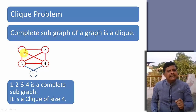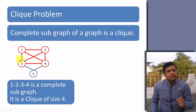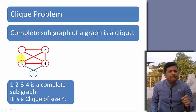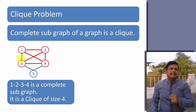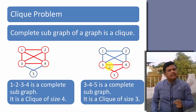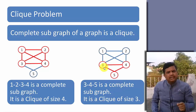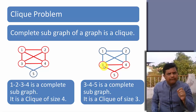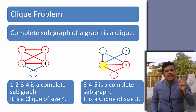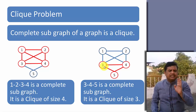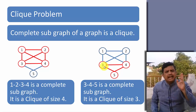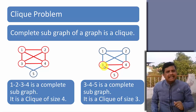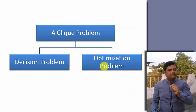I will be having a clique of size 2 between any two vertices, because any two vertices with one edge between them is a complete graph by itself. So vertex 1 and 2 can be a complete graph, so it is a clique of size 2. In this graph, vertex 1, 2, 3 and 4 is a complete subgraph, that is why it is a clique of size 4. Similarly, vertex 3, 4 and 5 is a complete subgraph with 3 vertices, so it is a clique of size 3.